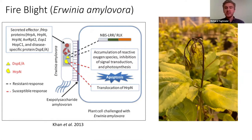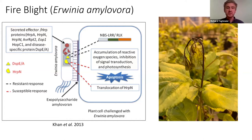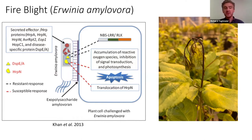Given it's a necrotrophic bacteria, its main directive is to kill as much host tissue as possible to feed off the dead material. It does this in two ways. It uses an exopolysaccharide amylovoran to constrict vascular tissue and restrict water or nutrition to the infected area. The other method is through a direct injection of bacterial effector proteins via the type 3 secretion system, which acts like a molecular syringe injecting effectors that block immune signaling and avoid host detection.